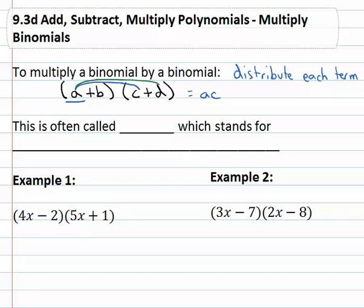Then we come back to this B that we've kind of ignored up till now and distribute that B through, giving us BC and BD.